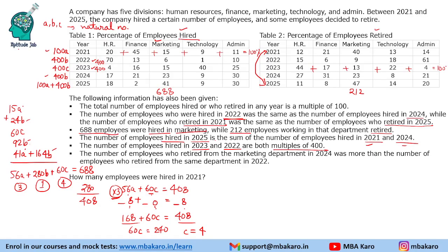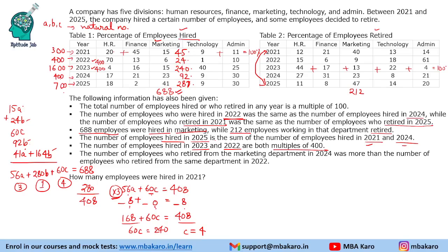This gives us: 2021 → 300 employees, 2022 → 400, 2024 → 400, 2023 → 1600, and 2025 → 100a+400b = 300+400 = 700 employees. For verification, computing marketing hired: 45 + 24 + 240 + 92 + 287 = 688. The total matches, confirming the solution for the hired part.